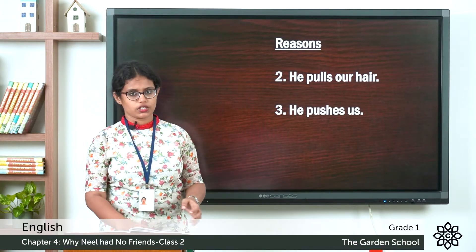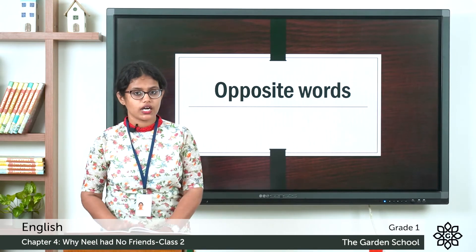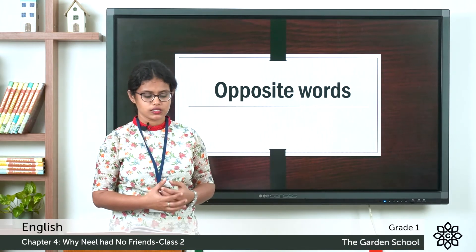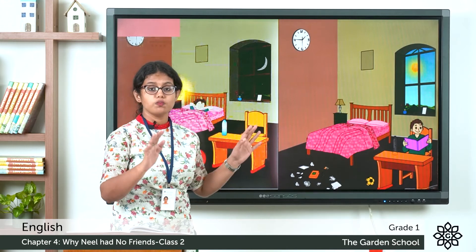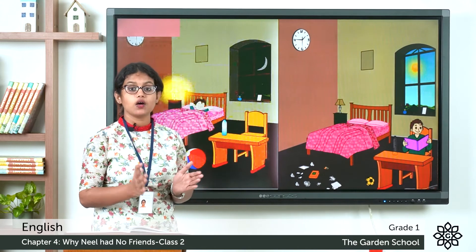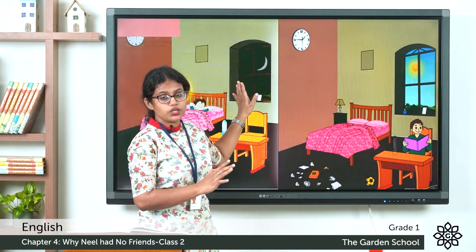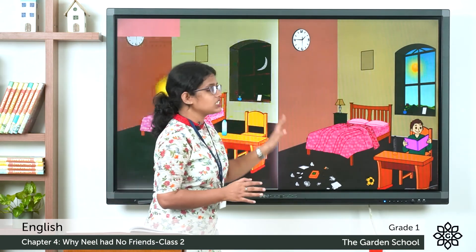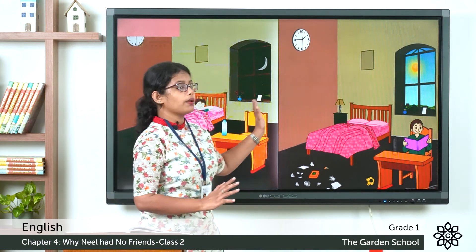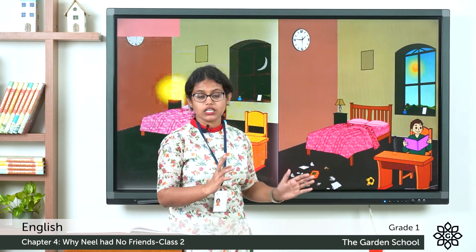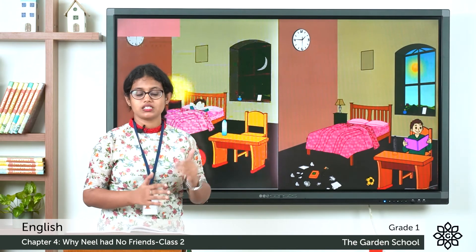Now let us learn about another topic — opposite words. In the first class I told you to make a flash card for opposites. Let's discuss these opposite words in detail. Here you can see two different pictures. We are going to observe these pictures and find the opposite words. In the first picture it is very dark and you can see a moon — so that is night time. In the second picture it is very clear and you can see the sun — so that is day time. Night time and day time — that is one pair of opposites.